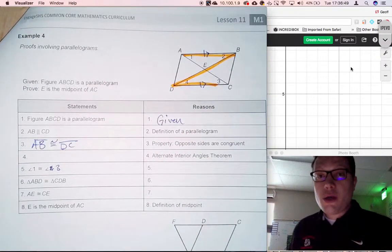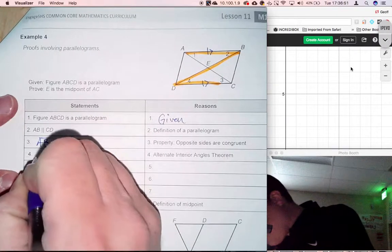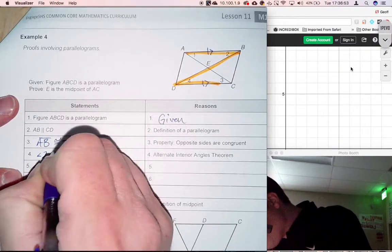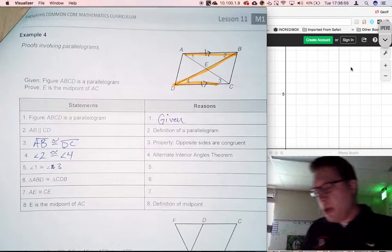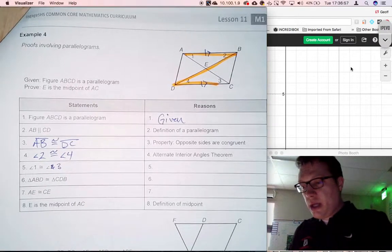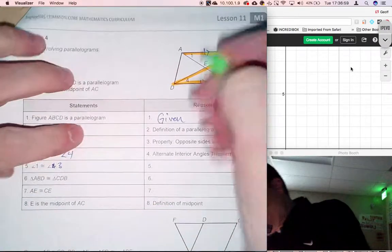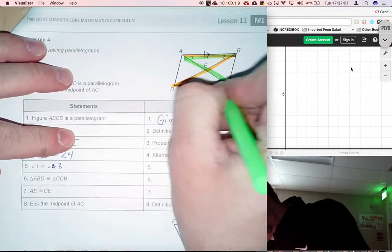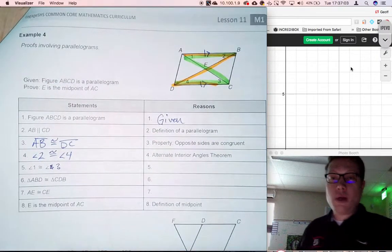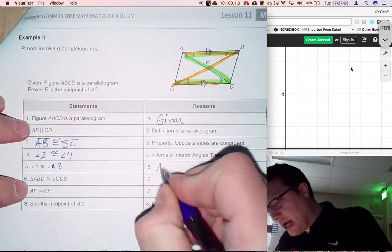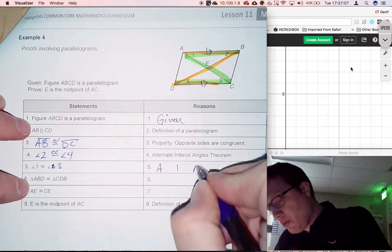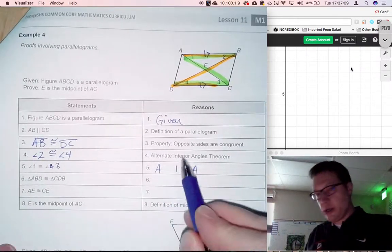the corners of the Z are equal angles. So angle 2 is congruent to angle 4. And for the same reason, a Z shape in another direction going this way, we know angle 1 is congruent to angle 3 for the exact same reason: Alternate Interior Angles.